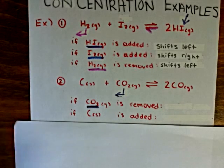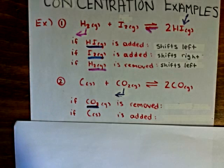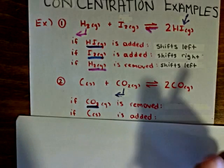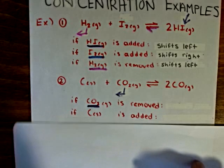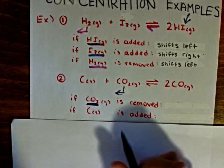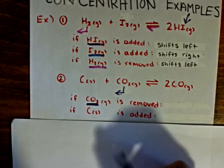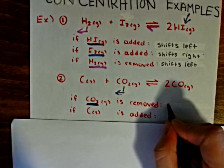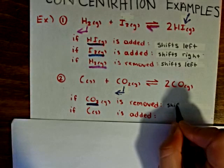The carbon dioxide is removed. So carbon monoxide on the product side will be turned into carbon dioxide in order to account for what was lost. Therefore, we can say that the equilibrium shifts to the left.